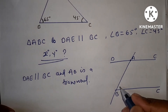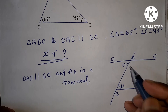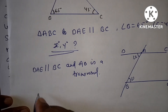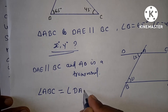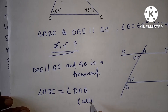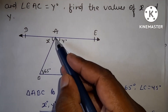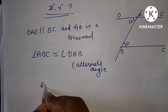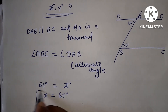तो आप जानते हो कि angle 1 और angle 2 — angle 1 जो है angle 2 के equal होगा, किस से? आपका alternate angles से। तो यह 65 degree जो है equal to x degree के बराबर हो जाएगा। Angle ABC equal to angle DAB — alternate angles से। तो ABC कितना है? 65 degree। और DAB कितना है? X degree। मतलब angle X equal to 65 degree। तो X की value निकल गई।